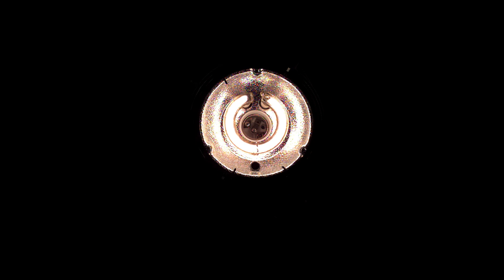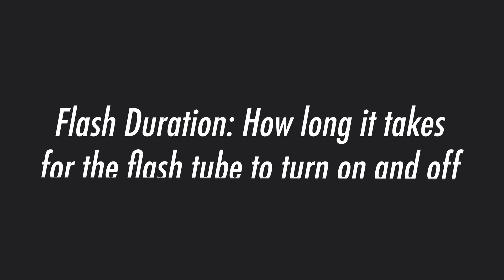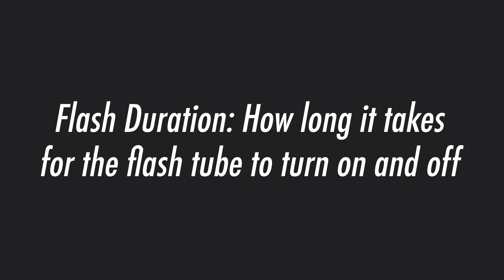The big misconception that photographers have about flash units is that when you've triggered the flash it fires instantaneously. But in reality what's happening inside your flash unit is that the flash tube turns on and off almost like it's powered with a dimmer switch. It takes time for that flash tube to ramp up the power to full output and then to turn off again. Flash duration is the measurement of how long it takes for that flash tube to turn on and off — it's simply a measurement of time.